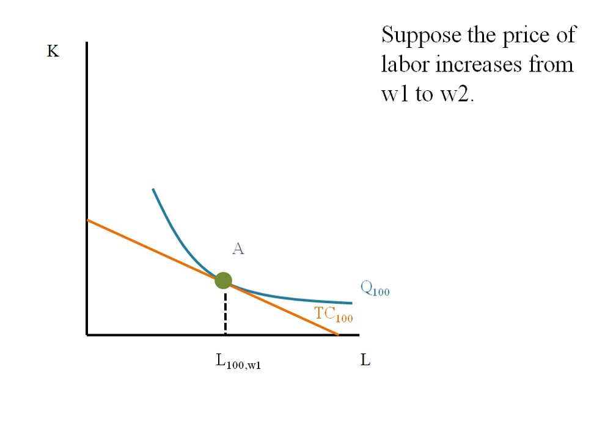Let's have the price of labor now increase from wage 1 to wage 2. This will give us a steeper isocost line. The slope of an isocost line is the negative of W over R, so if W is getting bigger our isocost line is getting steeper.